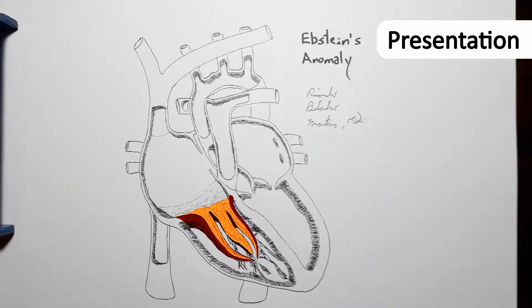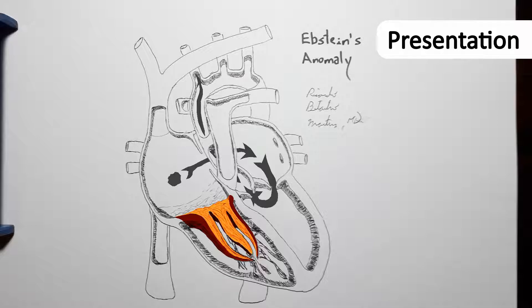Uncommon complications may also be the major finding, such as paradoxical embolism demonstrating the presence of the atrial septal defect, which then elicits a further investigation that reveals the tricuspid abnormality.